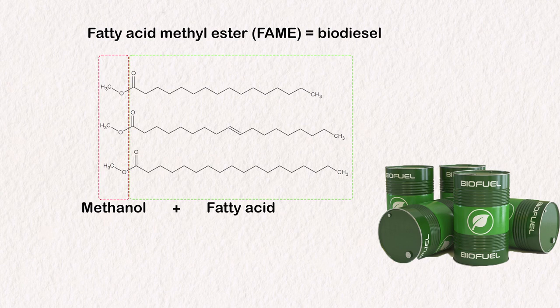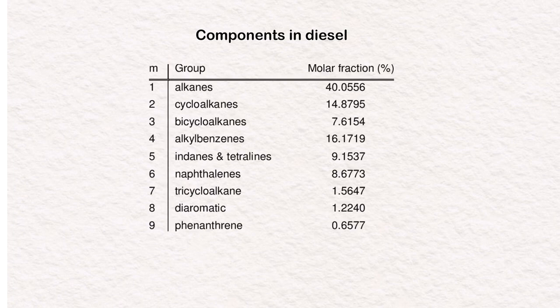Biodiesel only consists of one component, which are fatty acid methyl esters, or FAME for short, which are essentially a combination of methanol with a fatty acid. Compared to regular diesel, biodiesel is chemically completely different. Diesel contains a large variety of different compounds, while biodiesel only contains fatty acid methyl esters.